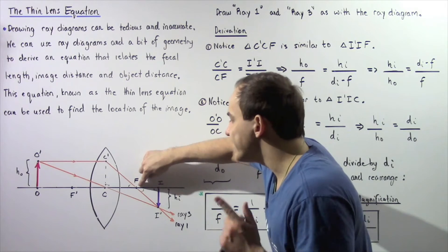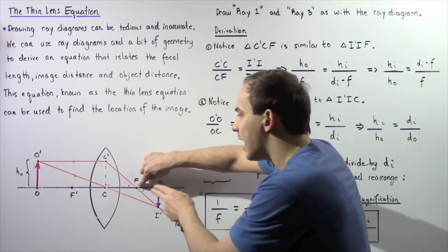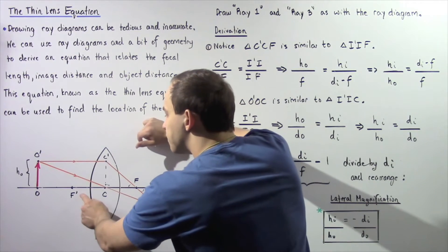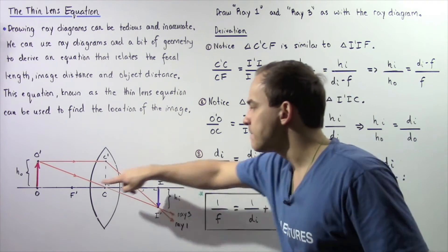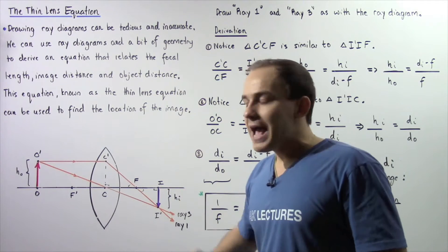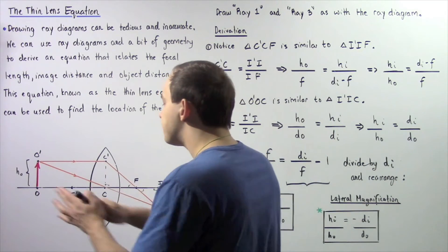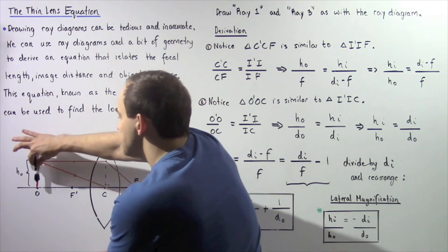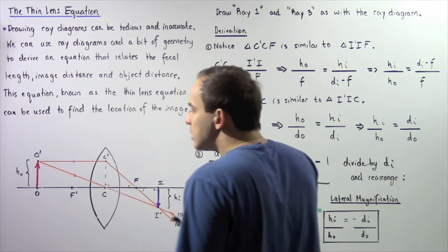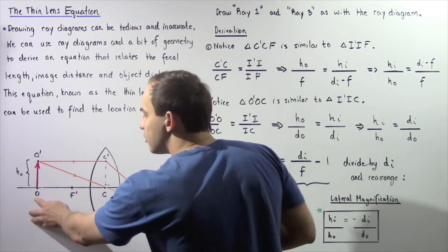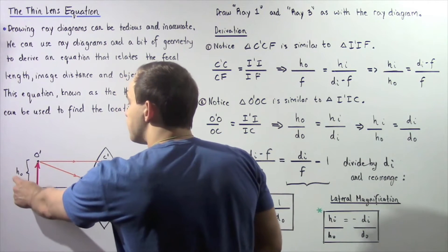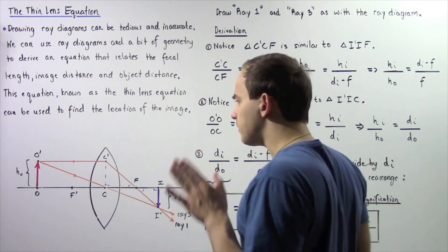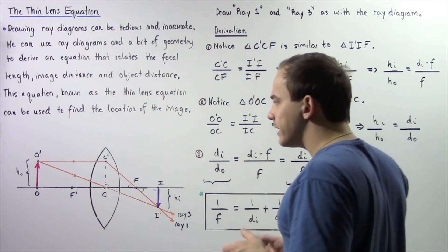Let's suppose this point is the focal point on the right side of the lens, given by F, and F' is the focal point found on the left side — so we have two focal points, F and F'. Now let's take our object and place it to the left of focal point F'. The object is shown by the red arrow, with height HO, beginning at point O at the bottom and ending at O' at the top.